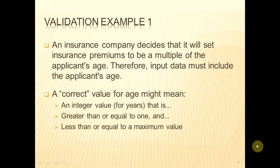For example, if an insurance company decides that it will set insurance premiums to be a multiple of the applicant's age, then the input data is going to have to include the applicant's age. And therefore, if we're going to validate it, we have to know what correct means. In this application, it could mean something like the applicant's age must be an integer, because we're going to represent it as a number of years. That integer must be greater than or equal to one, because we've decided we're not going to insure anybody under the age of one. And the applicant's age must be less than or equal to some maximum value, which might be as much as 130 or 140 — whatever the Guinness Book of Records says is the age of the oldest person.